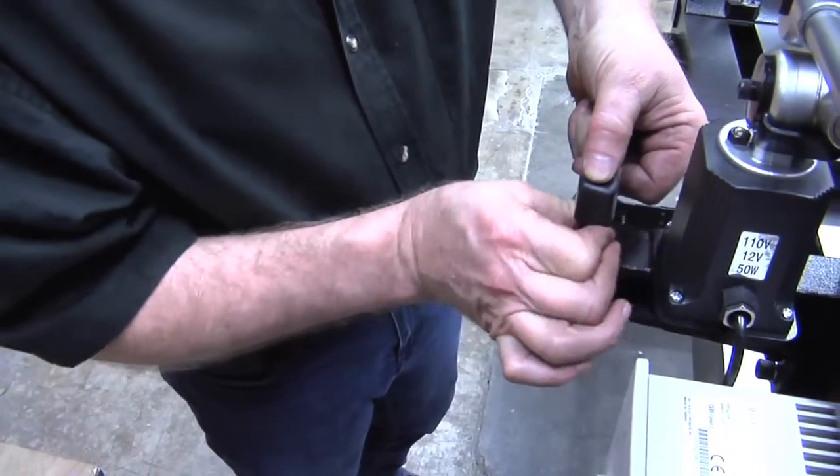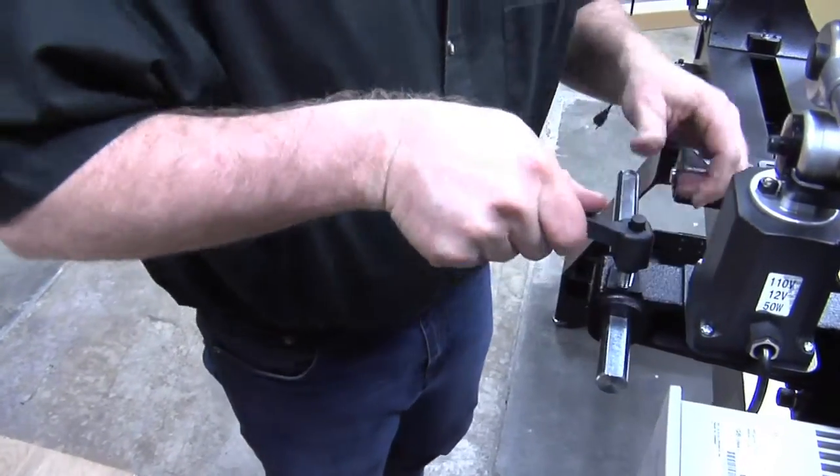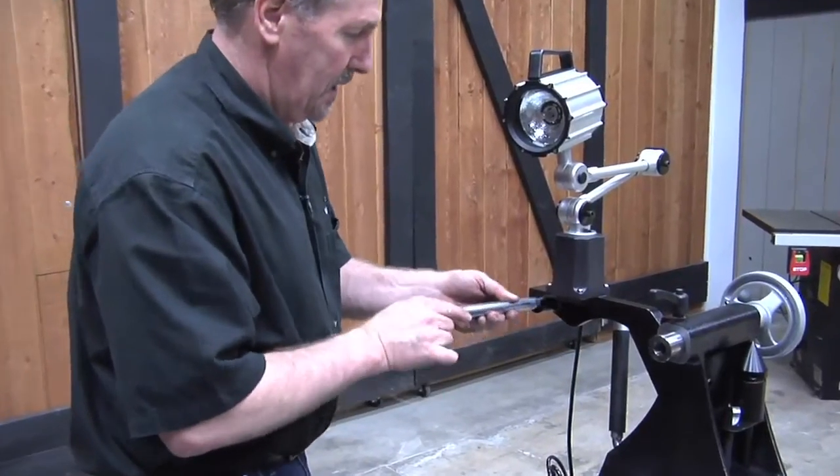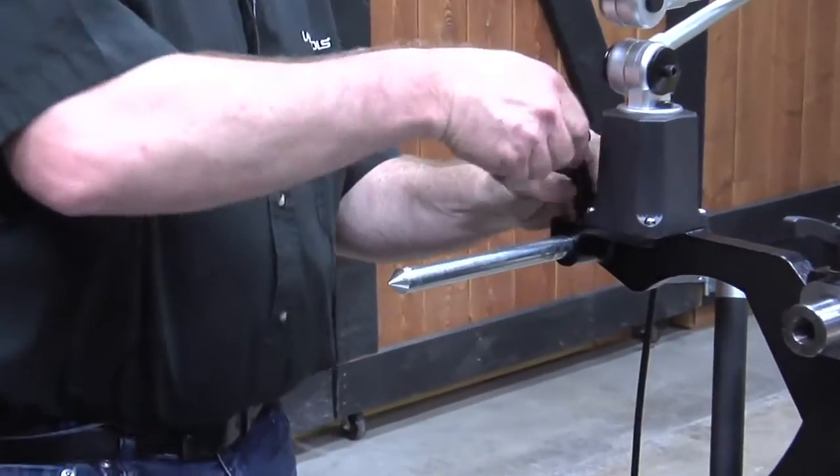Then you can use the ratchet handle. Here goes the one in the tailstock. We'll line this up and put our handle in.